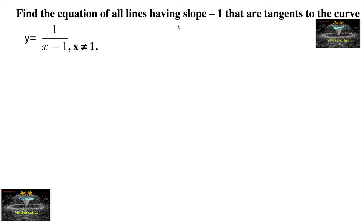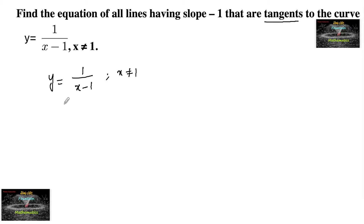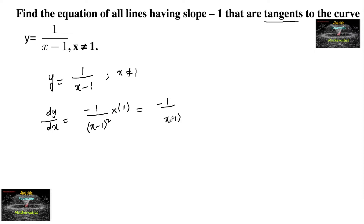Find the equation of all lines having slope minus 1 that are tangents to the curve y = 1/(x-1), where x is not equal to 1. We need to find the equations of tangents to the curve whose slope is negative 1. So let's differentiate this function: dy/dx is equal to minus 1 upon (x minus 1) whole square, since the differentiation of (x minus 1) is 1.